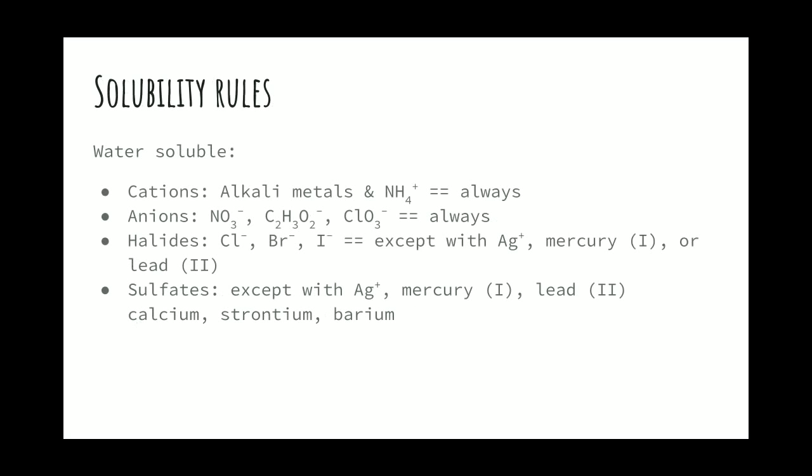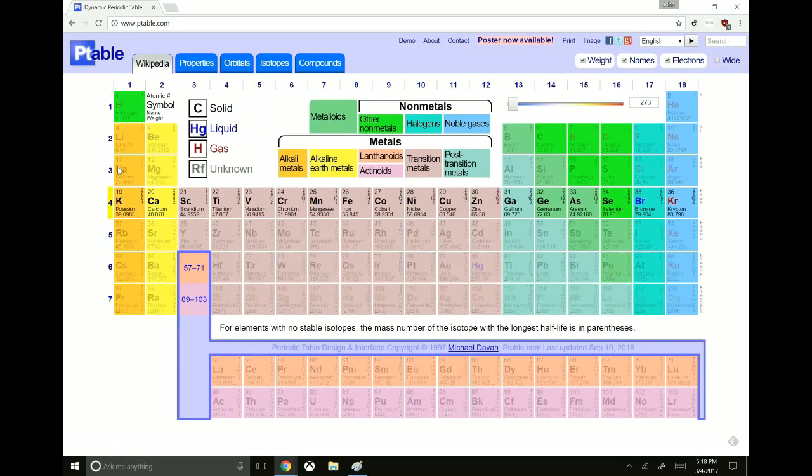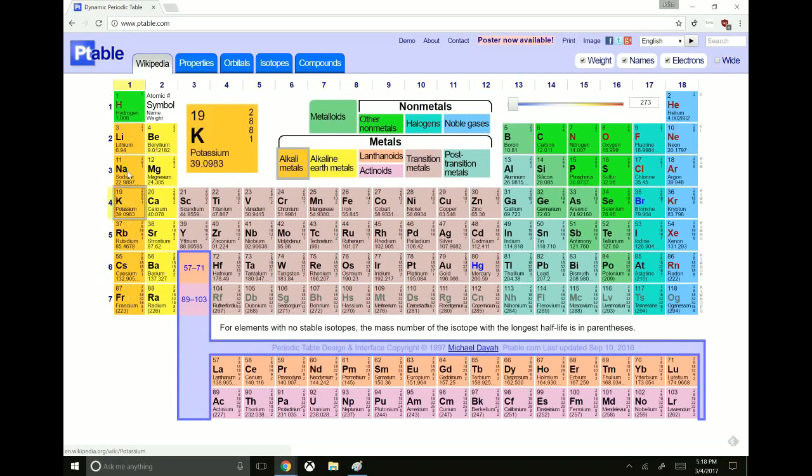So these are some of the rules for how you can tell if something is soluble or insoluble. These are the things that are always or almost always soluble. First off, ammonium is always soluble. It doesn't matter what it's partnered with. Next up, we have the alkali metals. So you'll recall the alkali metals are the first column. Any salt containing one of these guys is always going to be soluble. It doesn't matter what it's partnered with. It will dissolve very nicely in water.